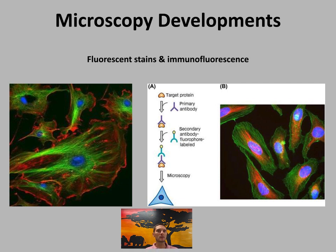Another development is immunofluorescence. Antibodies that bind to particular chemicals in the cell are tagged with fluorescent markers of different colors and linked to those antibodies. This allows images that show where chemicals are located, and you can show multiple different chemicals at one time due to the tagging. You can find the location of a specific type of protein — whether it's being produced, present, or absent — and it also produces really clear, colorful images.